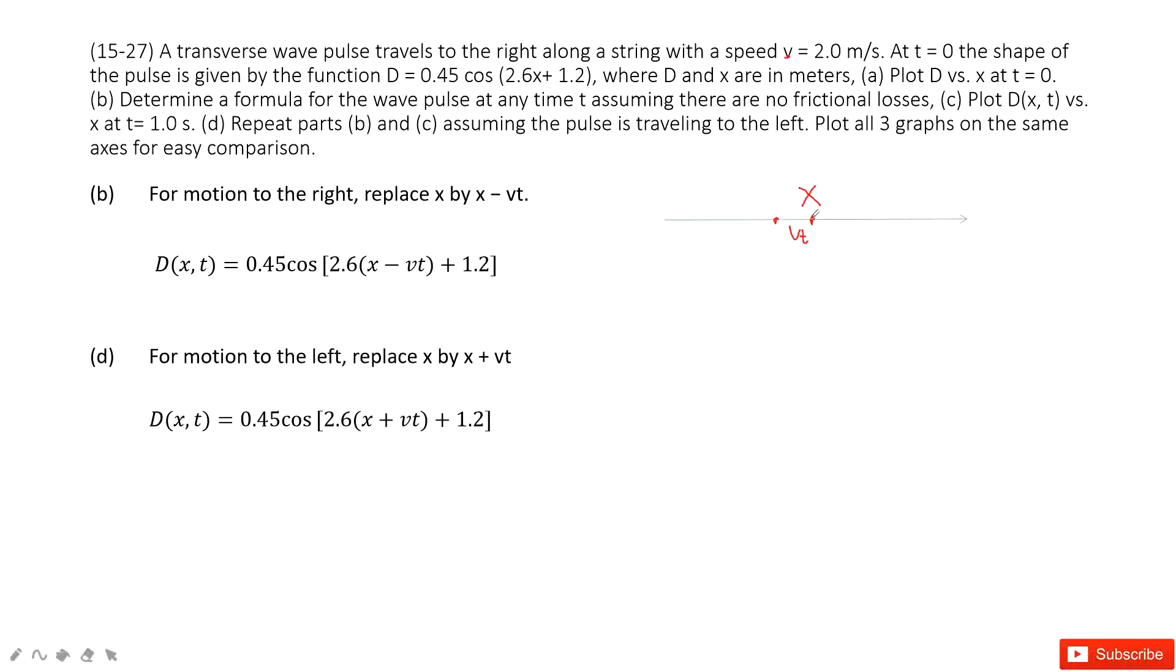So now it is x, but if we don't consider this v times t, it is 0. So this position is x minus vt.